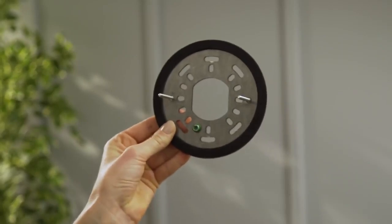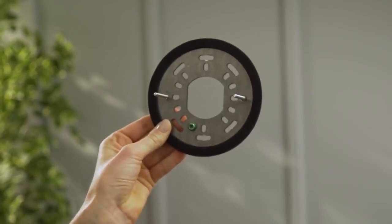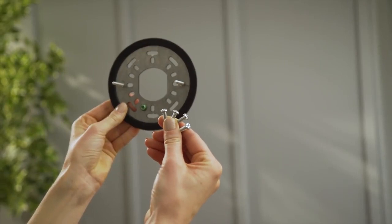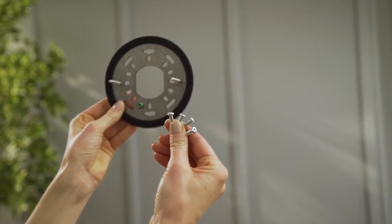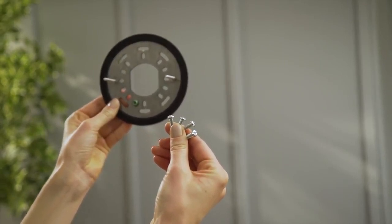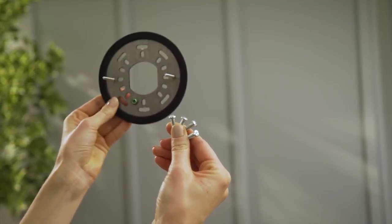This is Floodlight Cam's mounting bracket, which will attach to your junction box using these mounting screws. You'll only need two screws to securely mount your bracket, but we're including four just in case you want to use more.